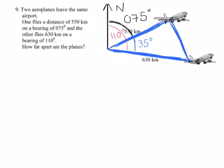So what we have now is a triangle where we know two of the sides, 550 and 630. And we also know the angle between them, 35 degrees. So that then is enough information for us to recognize, hopefully, that this is the cosine rule.